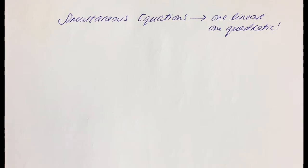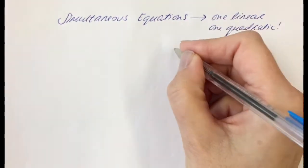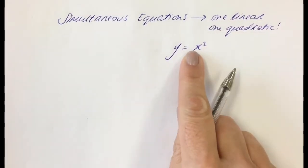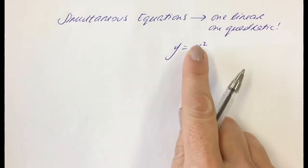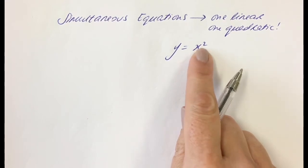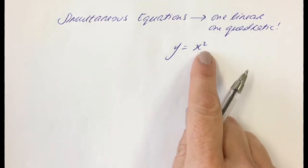In this video we're going to look at simultaneous equations, but when you have one linear equation and one quadratic equation. A quadratic equation is whenever you have a power of 2, so an x squared term of any type in the equation - it is a quadratic.